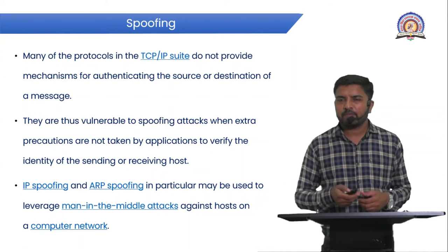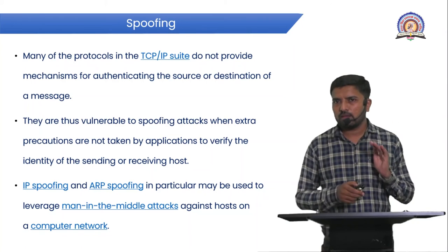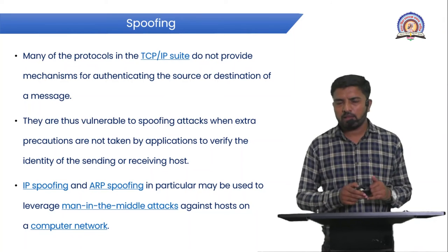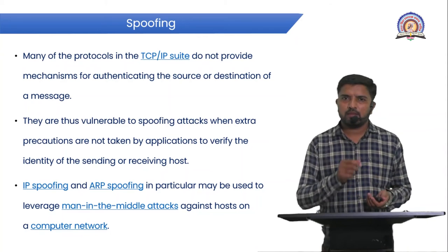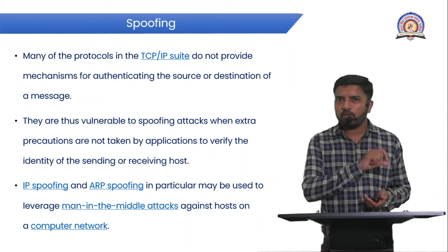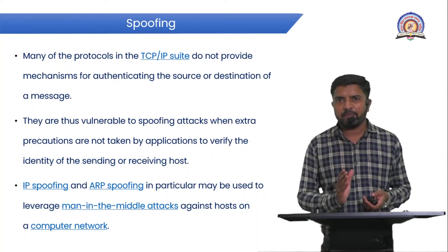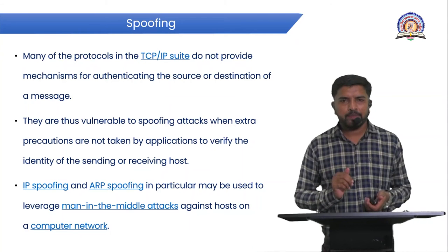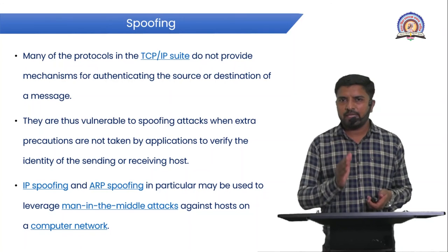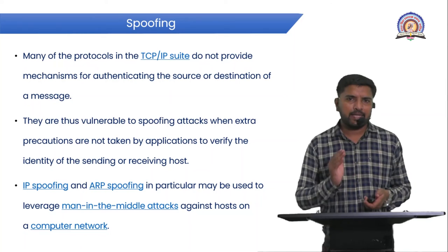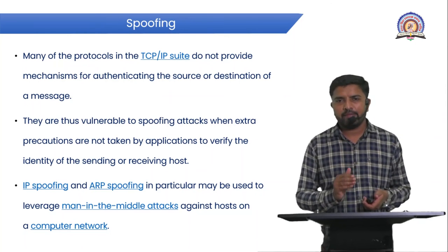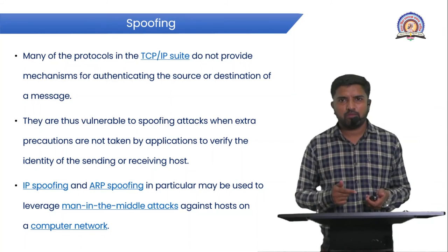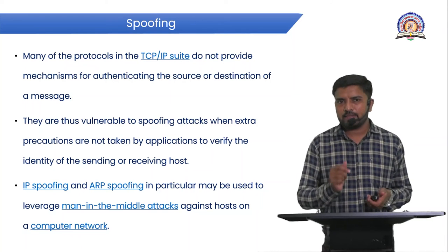In IP spoofing, it may also happen that the sender and receiver addresses appear legitimate, but the attacker intercepts the message in the middle. For example, if person A sends the message 'come at 2 PM' to person B, the attacker can stop that message, modify it — changing '2 PM' to '6 PM' — and then send the modified message forward. This is a man-in-the-middle attack, which is also associated with spoofing.